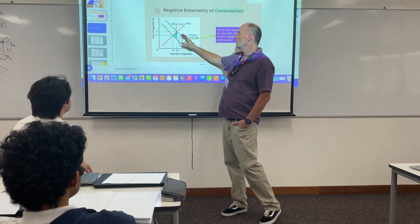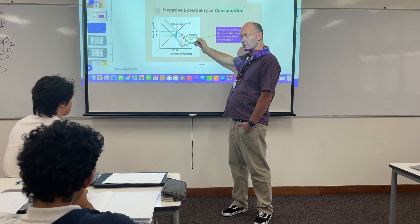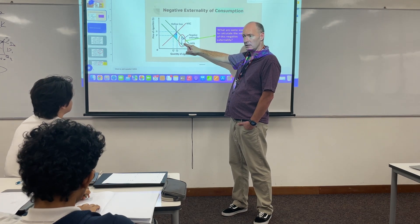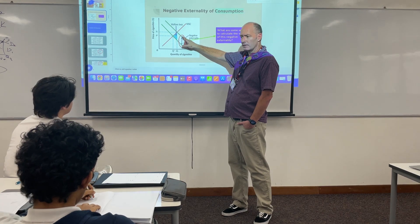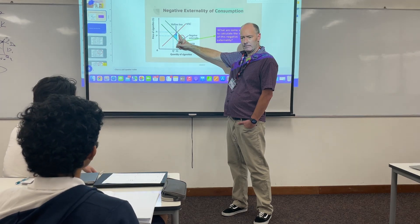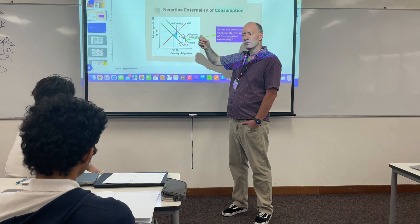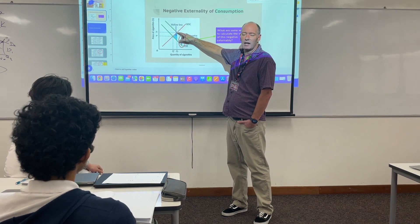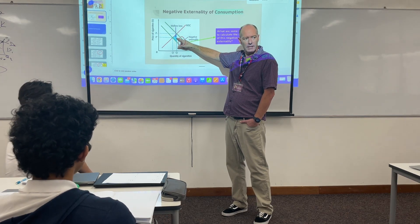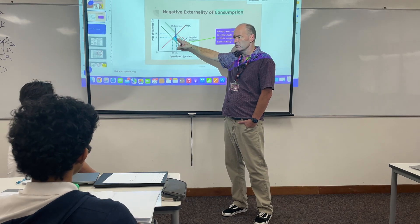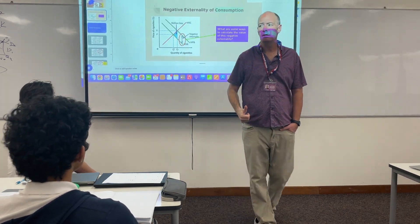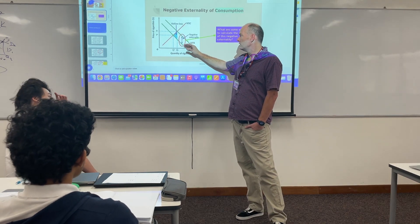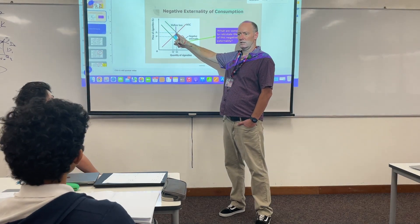When it's a consumption externality, it's always on the demand side. The divergence with a negative consumption externality is that the marginal social benefit (MSB) is less than the marginal private benefit (MPB). Because when I consume the good it makes me happy — I get maybe ten dollars worth of utility — but then somebody else gets cancer, has to go to the hospital and pay their bills. So the total utility involved in smoking that cigarette is less for society. The social benefit is less than the private benefit, and so you get overproduction and deadweight loss.